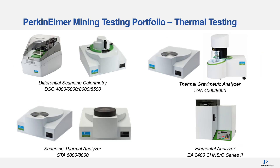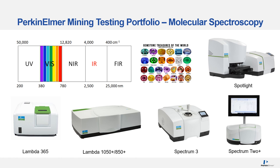Aside from atomic spectroscopy, PerkinElmer has a good thermal testing portfolio used in various stages of the mining process. We also provide testing solutions for gemstone quality and purities via our wide portfolio of molecular spectroscopy, featuring the Spectrum 3, Spotlight, and Lambda series. These techniques empower laboratories with the right analysis for identification of gem type, diamond type classification, counterfeiting testing, treatment, quality, and geographical origin.